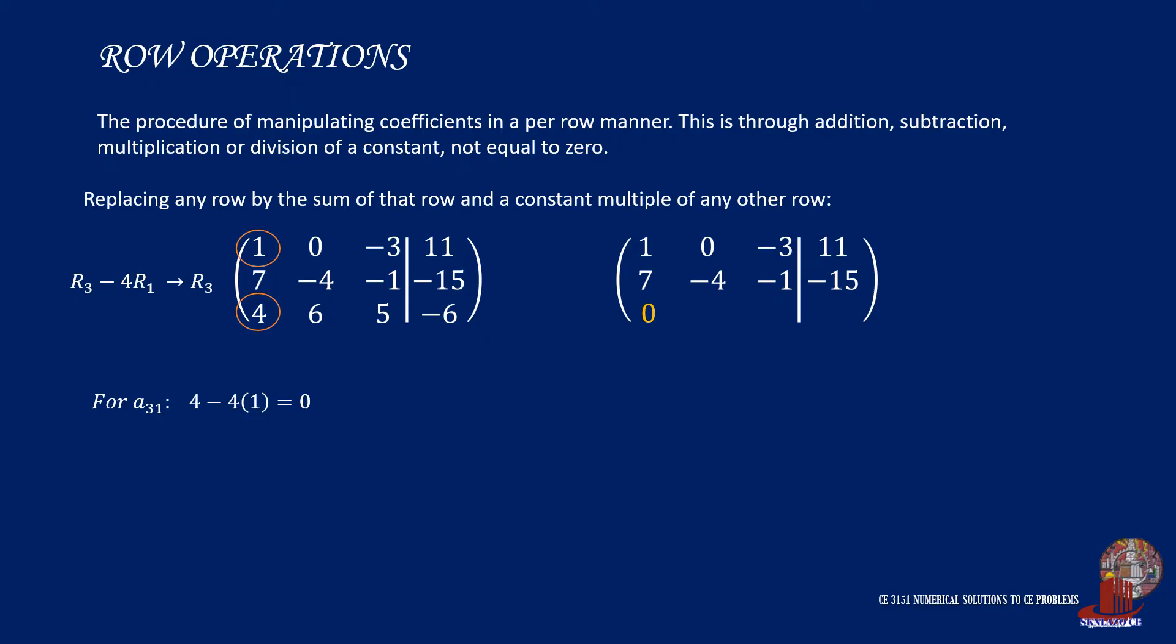For element 3,2, we have 6 minus 4 times 0, which is still 6, placed in the updated matrix. With element 3,3, we have 5 minus 4 times negative 3, and that is 17. Then for the constant, we have negative 6 minus 4 times 11, which equals negative 50.